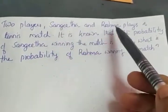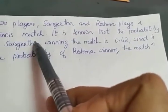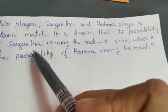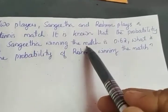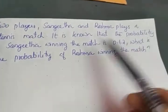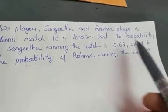Two players, Sangeeta and Reshma, play a tennis match. It is known that the probability of Sangeeta winning the match is 0.62. What is the probability of Reshma winning the match?